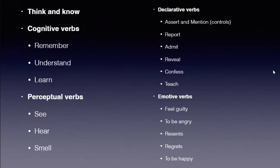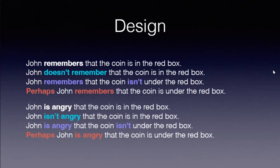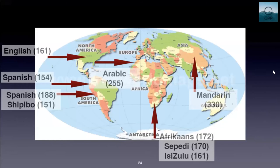'Think' and 'know' serve as our benchmarks. We also tested 'remember,' 'understand,' and 'learn' — as a professor I was very keen to see whether learning is factive. Perceptual verbs are interesting because they contrast within their class: are some factive while others are not — seeing, hearing, smelling? Emotive verbs include both positive and negative emotions: guilt, resentment, anger, and happiness. The design is the same as before, except we only included one cancellation context — the epistemic modal.